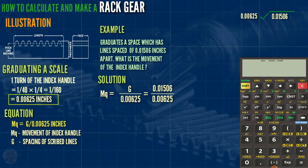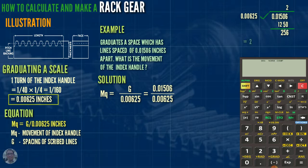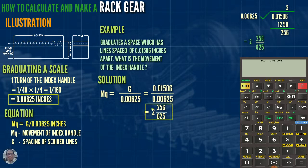The result is two point five zero, then five five, twelve, six, five, two — giving us two hundred fifty-six over six hundred twenty-five.